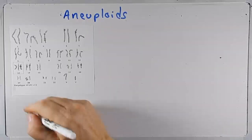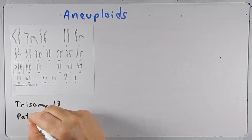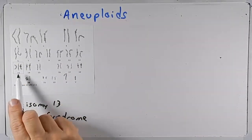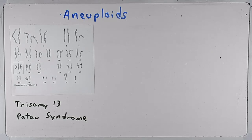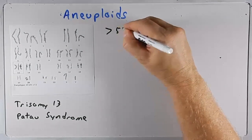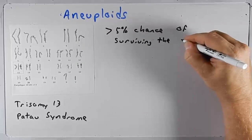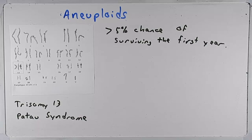Trisomy 13, shown in this karyotype with three copies of chromosome 13, is commonly referred to as Patau syndrome. All chromosomes are typical except chromosome 13 has three copies. Similar to trisomy 18, most individuals with trisomy 13 don't survive embryonic or fetal development and are lost during spontaneous abortions. Those that do survive have less than a five percent chance of surviving the first year. Those who survive that first year usually don't survive more than another year or two. Mosaics can survive a little longer.